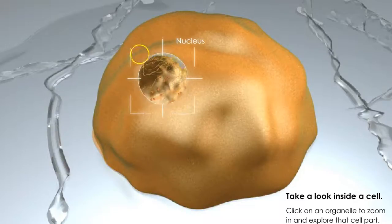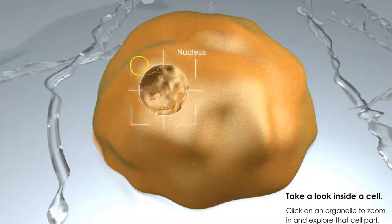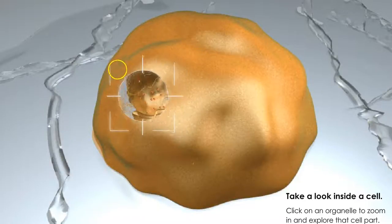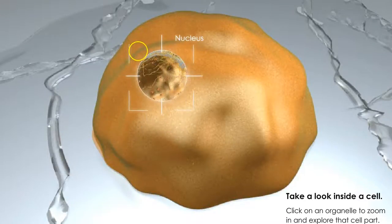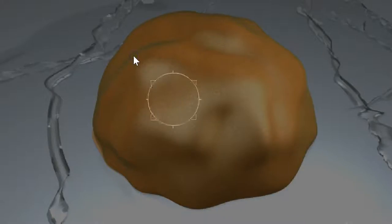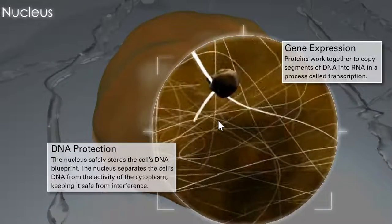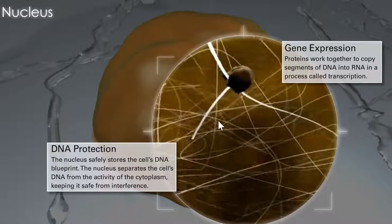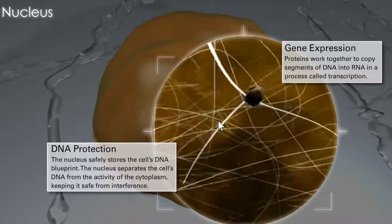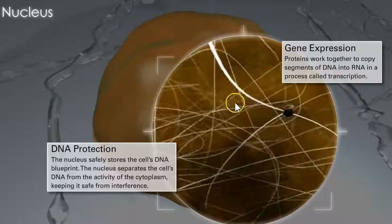The nucleus, as you see right here, is circular and in the inside of the cell. It's like the brain of the cell, many people say, or the Book of Life. Inside of it are all of the instructions for how a cell or a living thing should be organized, how it should function, what it should do.